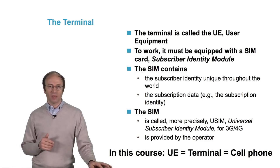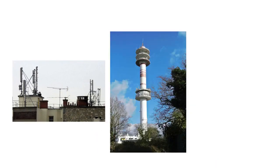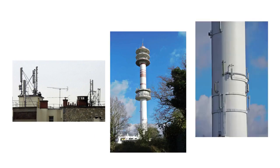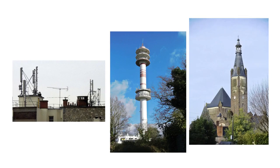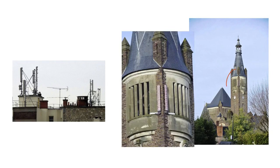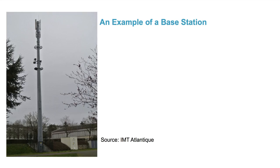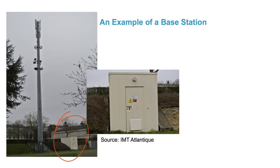The network is not limited to that. If we walk in the street, we see antennas on the roofs of buildings like this one, or on towers like this one. With a zoom, we can clearly see the antennas. In some cases it's a bit more difficult to see, but here we have an antenna on this church. If we zoom in, we can clearly see the antennas on the bell tower of the church. What we see are antennas on the mast and, beside it, a technical cabinet.